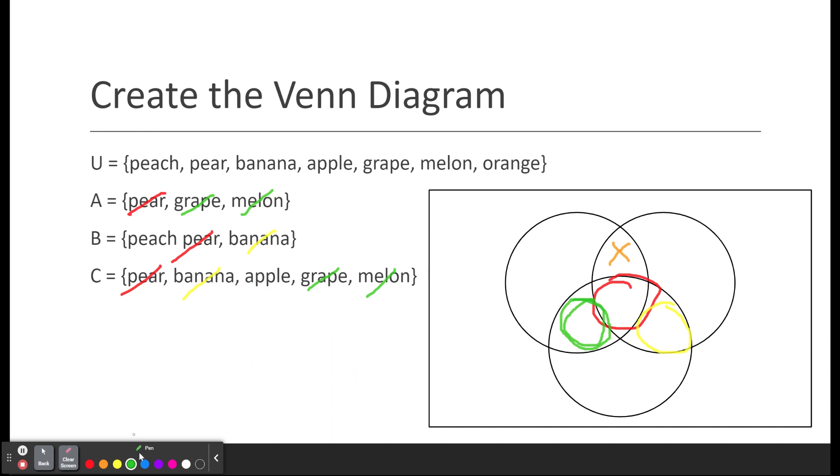And then lastly, I've got apple. Apple is going to go all by itself in C. So apple goes down here. And peach goes all by itself in B. So peach is going to get written over here. And that takes care of all my sets. And then I've just got the universal set. I've already used peach, pear, banana, apple, grape, melon. That means all I have left is orange, and orange will get put in this region down here.